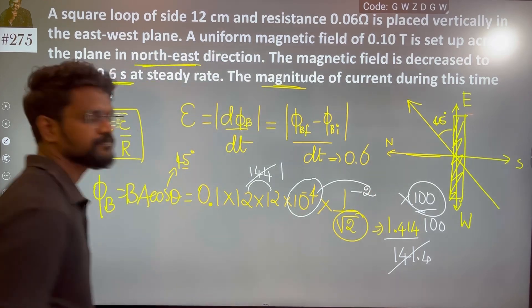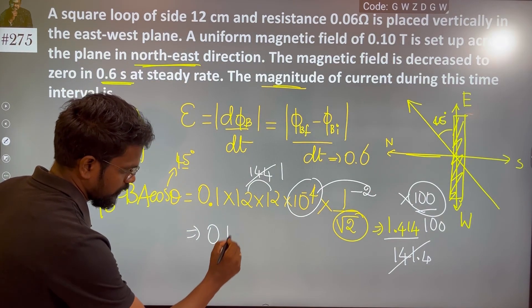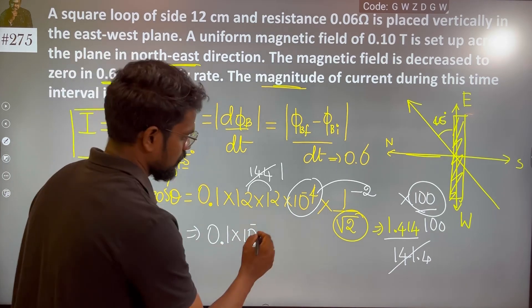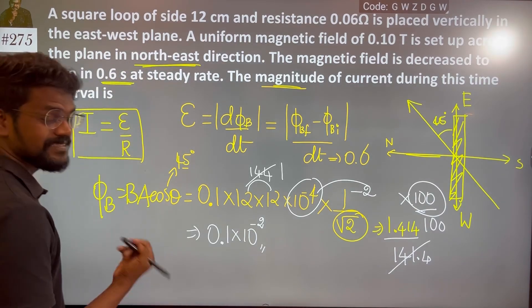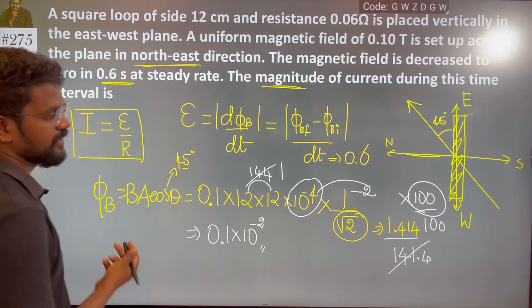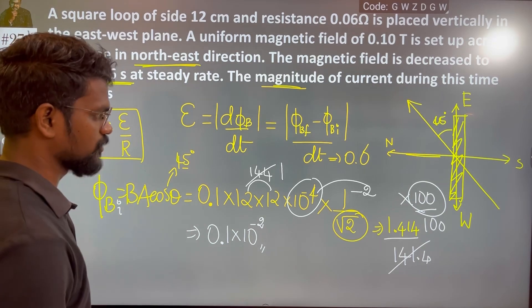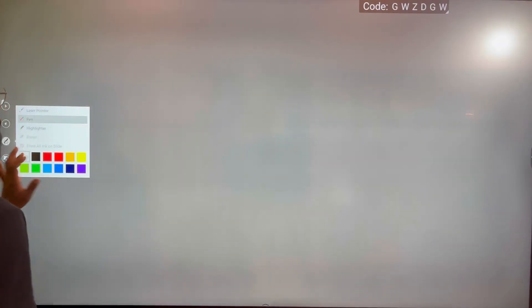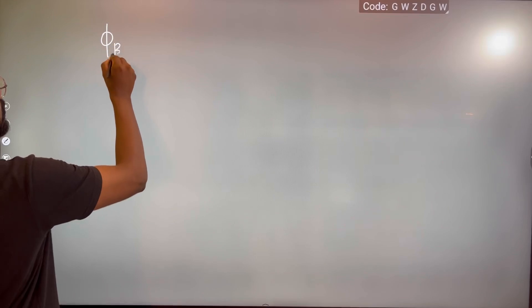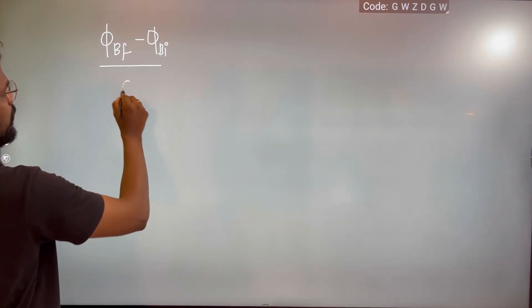The value of 1/√2 is approximately 0.1 × 10⁻². This gives us the initial flux. The final flux is 0.1 × 10⁻². Now we compute final minus initial flux upon dt.